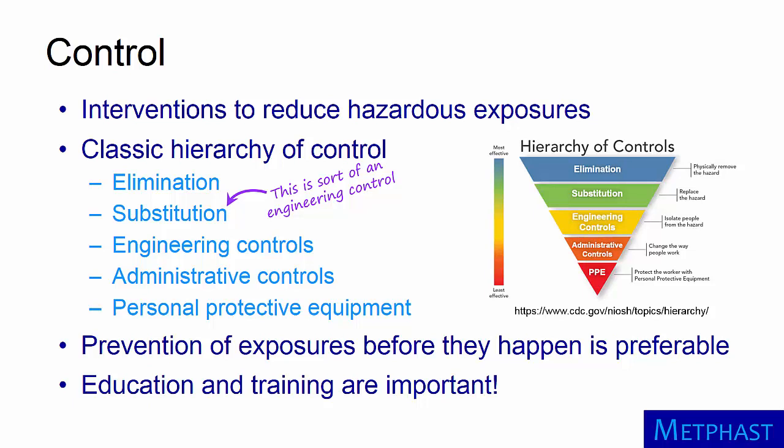Administrative controls are changes in how, when, or by whom work tasks are conducted. Administrative controls include work practice controls — changes in the way that people perform work tasks in order to reduce exposure. Work practice controls can be very effective, but they can get lost in the administrative control category. For these reasons, I sometimes list work practice controls as a separate category.